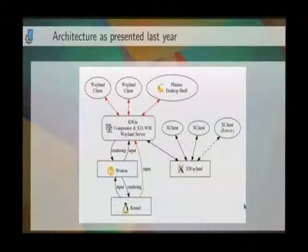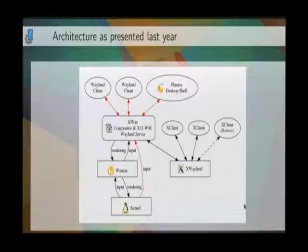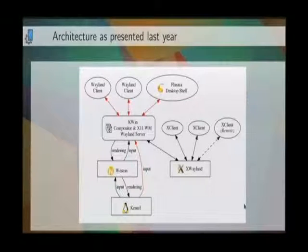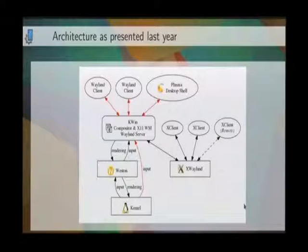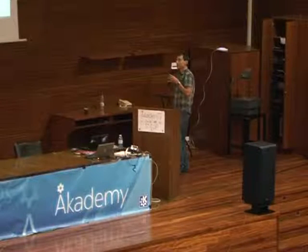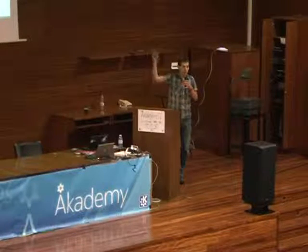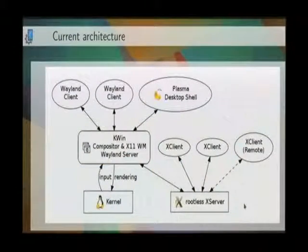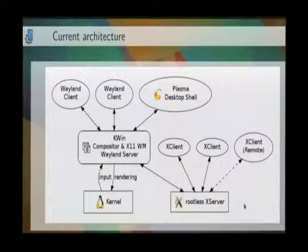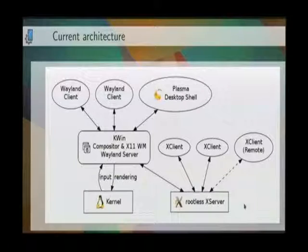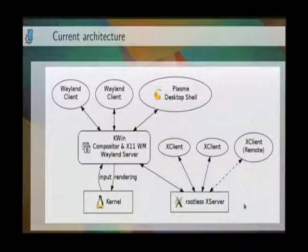That was the architecture slide I presented last year. Most notably, we still had a few red arrows — red meant everything which wasn't implemented at that time. We had a question in between: we were not yet able to handle Wayland clients, we were not yet able to handle input, and we still needed another Wayland compositor to do our low-level work. Our architecture doesn't have red arrows anymore.